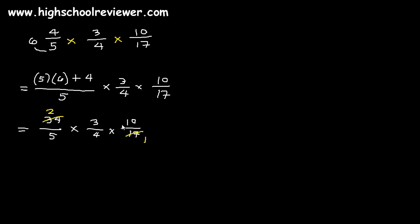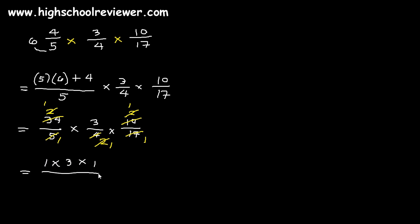We can also divide 10 and 5 — 5 is common. 10 divided by 5 is 2, and 5 divided by 5 is 1. We can also divide 2 and 4: 2 divided by 2 is 1, and 4 divided by 2 is 2. We can still divide 2 and 2: both give 1. We now have 1 × 3 × 1 over 1 × 1 × 1, which is 3 over 1, or simply 3. This is our final answer.